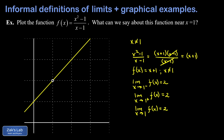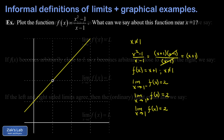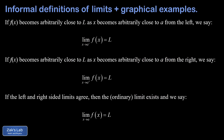That's a basic introduction to the informal idea of a limit and limit notation. Now for our informal definitions, mirroring what we just did: if f(x) becomes arbitrarily close to L as x becomes arbitrarily close to a from the left, then the limit as x goes to a from the left of f(x) equals L. In our example, x approached 1 from the left and f(x) approached 2.